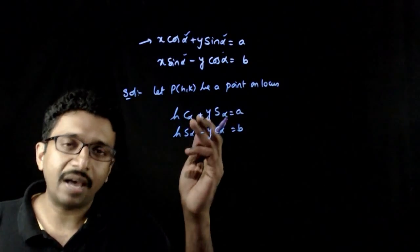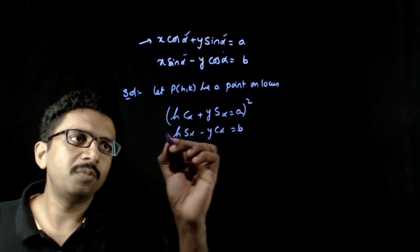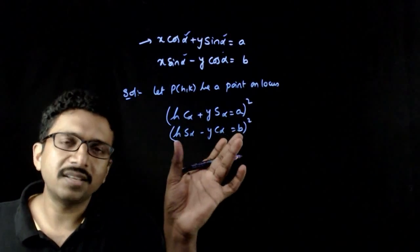To eliminate alpha, you have a very straightforward process. I will square it on both sides, square this equation on both sides.